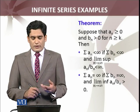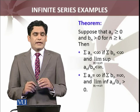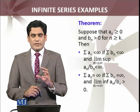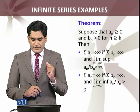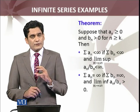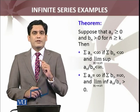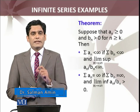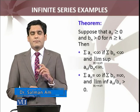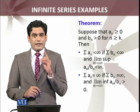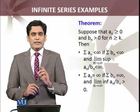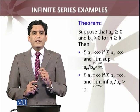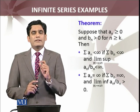Let me recall the theorem. Suppose aₙ ≥ 0 and bₙ > 0 are terms of a series for n ≥ k. Then summation aₙ will converge if summation bₙ is convergent and the limit superior of aₙ/bₙ is a finite number. The second part: summation aₙ will diverge if summation bₙ is divergent and the limit inferior of the sequence aₙ/bₙ is greater than 0.